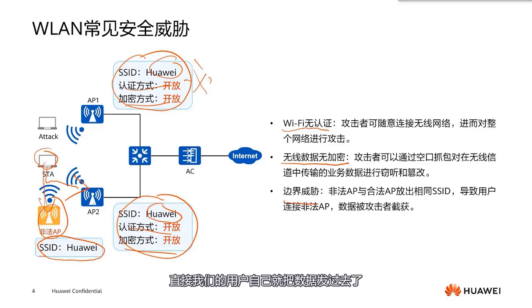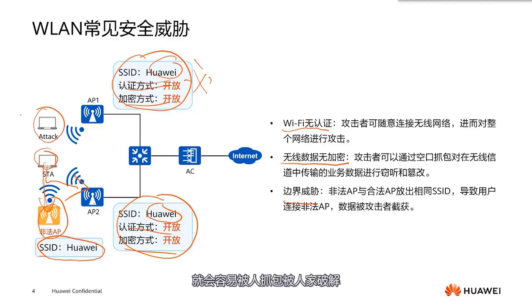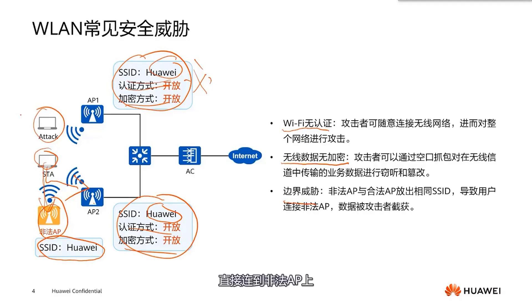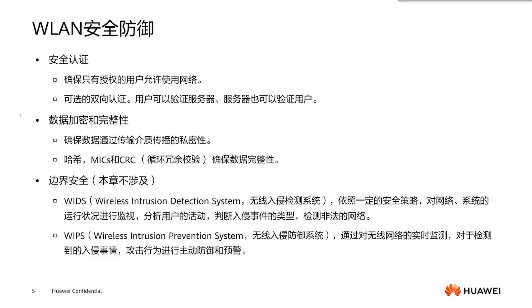These are some common types of threats. If the network is not authenticated, it can be attacked. If data is not encrypted, it is easy to be intercepted and others can decipher what you are transmitting. Another issue is unauthorized APs — directly connecting to an unauthorized AP means all your transmitted data can be intercepted. In response to these threats, we now have specific security measures in place.